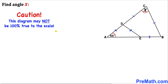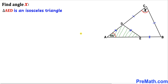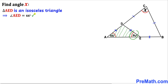We make it clear that this figure may not be 100% true to scale. Let's focus on triangle AED — this is an isosceles triangle since side AD equals side ED. Therefore this angle has to equal this angle. If this angle is 44 degrees, this angle has to be 44 degrees as well, so angle AED turns out to be 44 degrees.